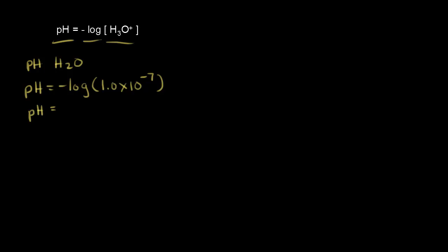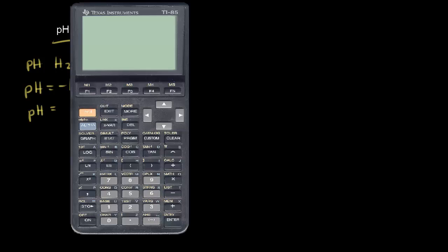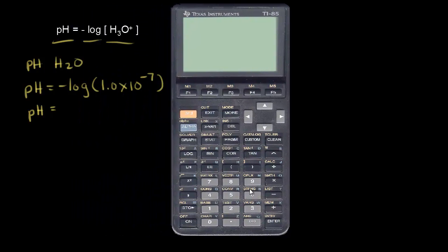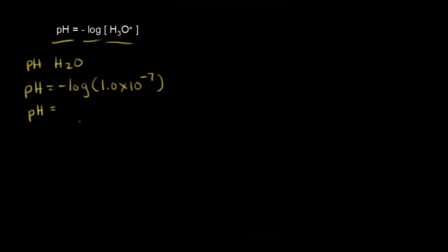If you know logarithms, you can do this in your head. I'll get out the calculator here and show you what to do. You would press negative log of 1.0 times 10 to the negative 7, and we get 7 for our answer. So a pH of 7.